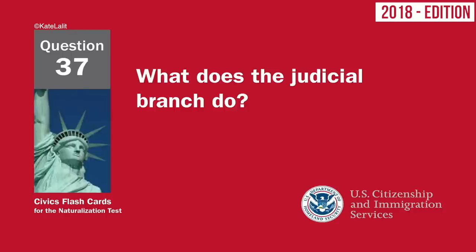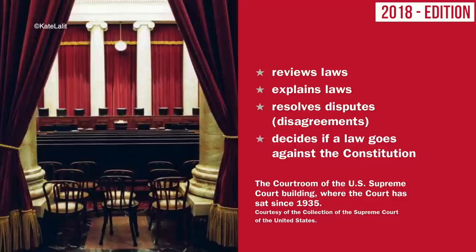What does the judicial branch do? Reviews laws. Explains laws. Resolves disputes and disagreements. Decides if a law goes against the Constitution.